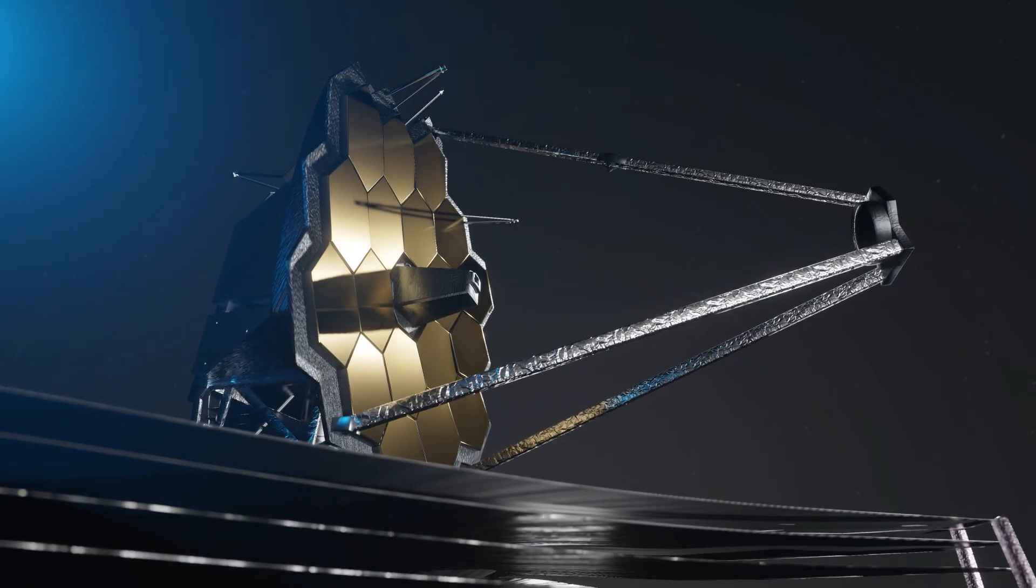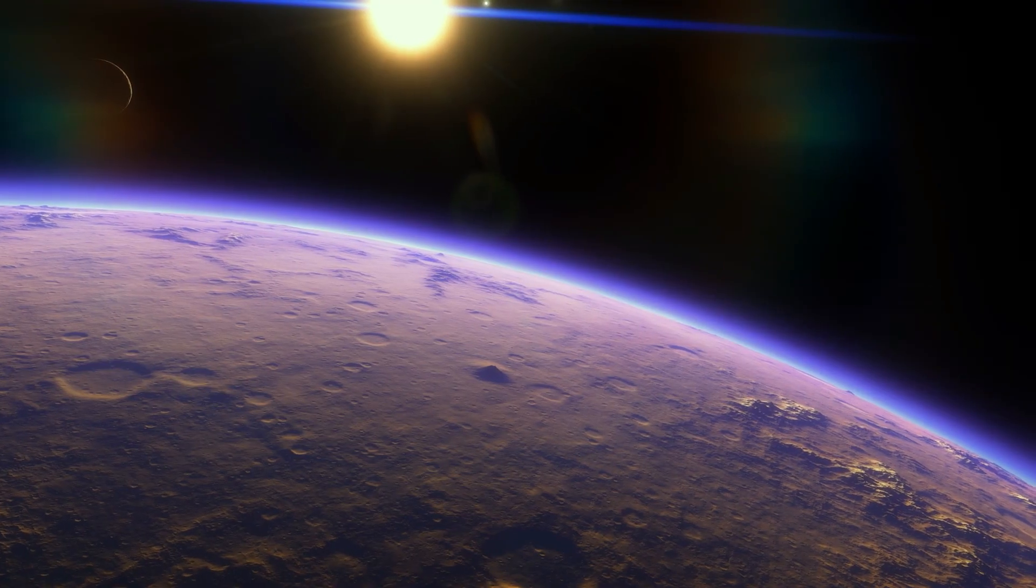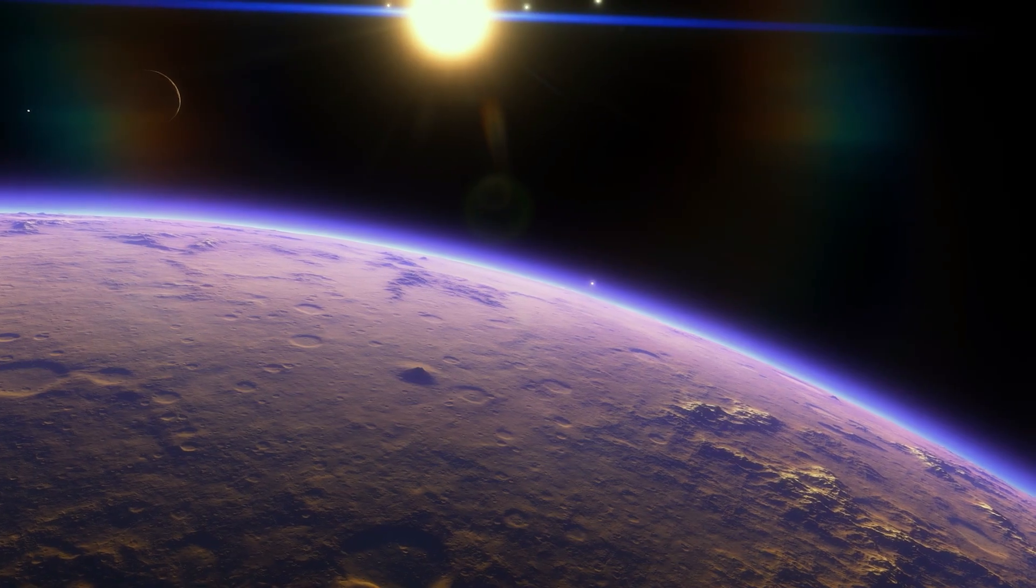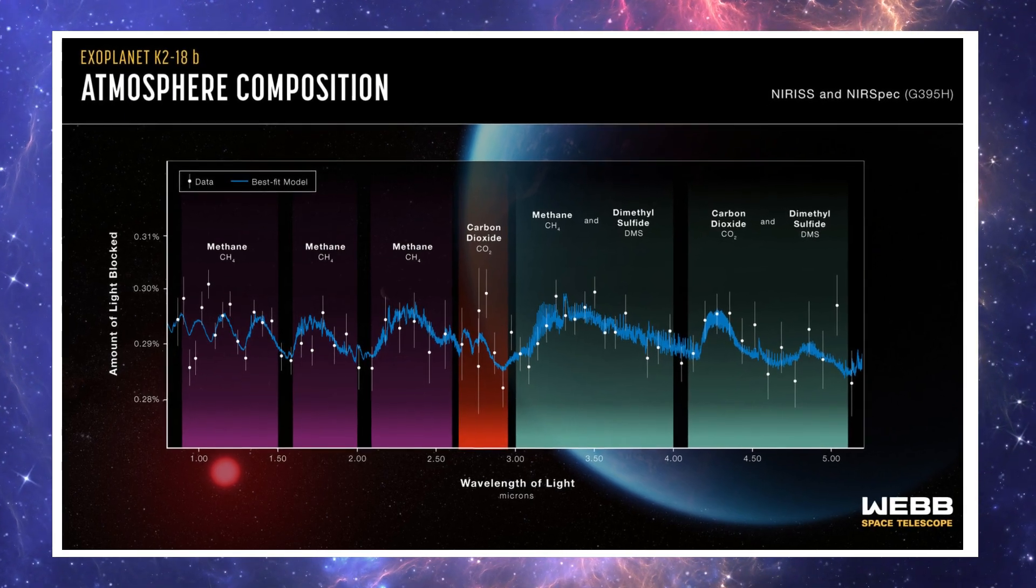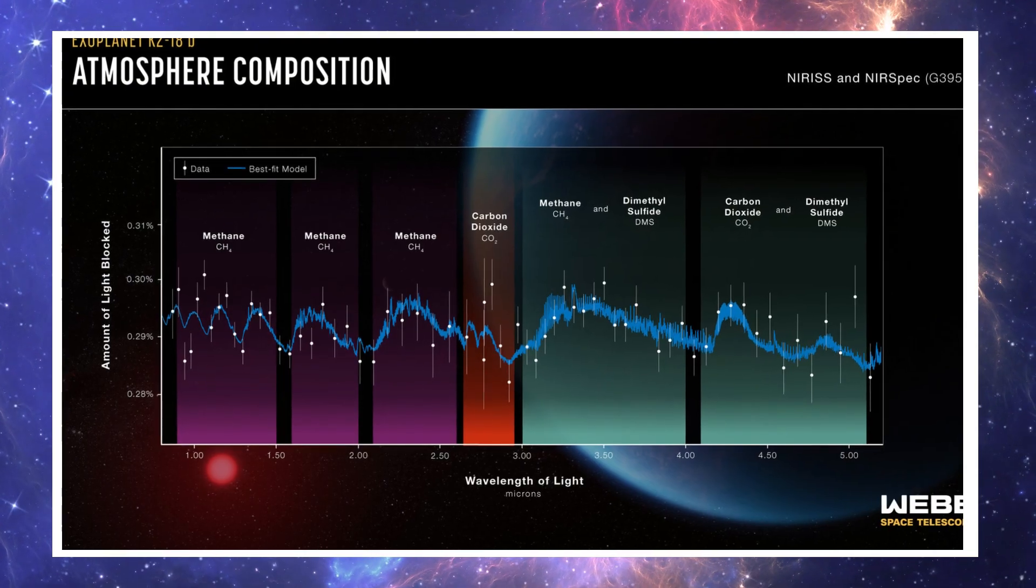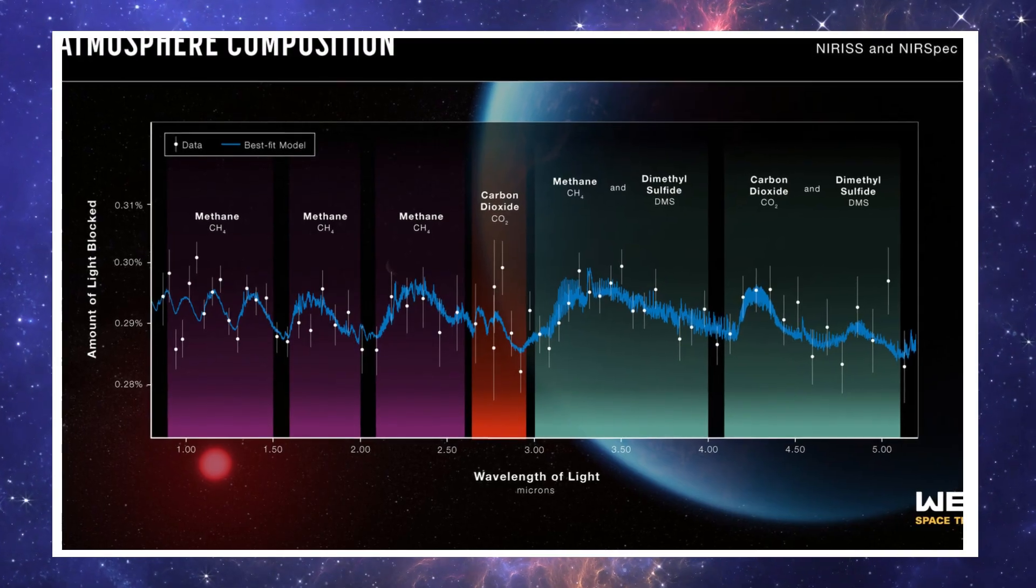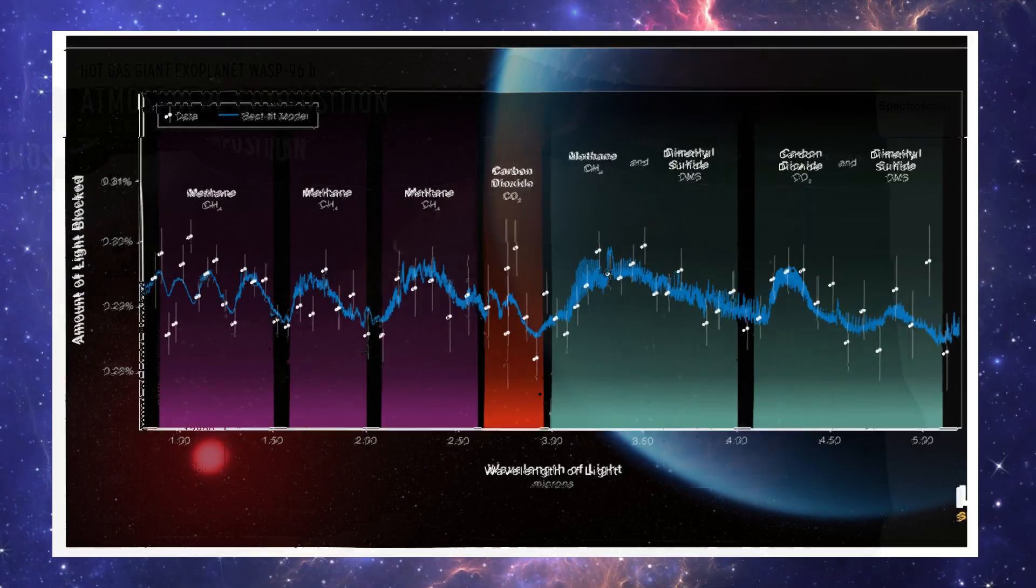If galaxies and stars show us the grand architecture of the cosmos, exoplanets show us something far more intimate. The possibility of life. James Webb has turned its infrared spectrographs onto distant worlds, splitting their light into rainbows of data. Hidden in those rainbows are fingerprints. Chemical signatures that reveal what alien skies are made of. Webb has detected water vapour, carbon dioxide and methane in the atmospheres of planets many light years away.